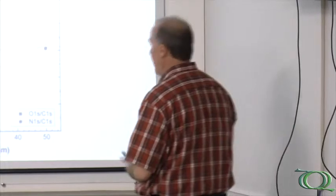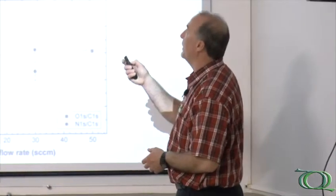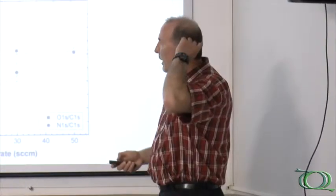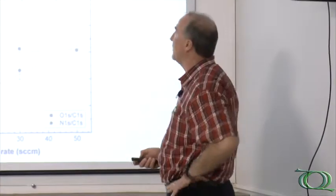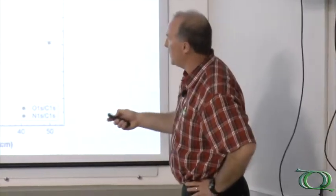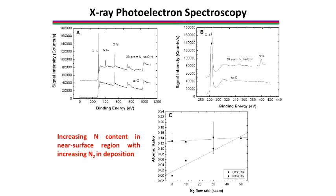Chemically we can use x-ray photoelectron spectroscopy to tell us something about the chemical composition in the near surface region of the film. If we just look at this particular view graph, this is plotting the atomic ratio of oxygen to carbon, that's these dots, and nitrogen to carbon, that's the dots here.